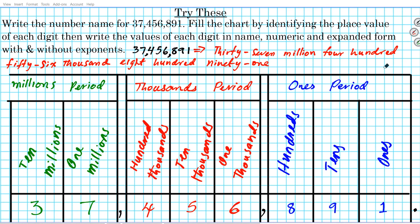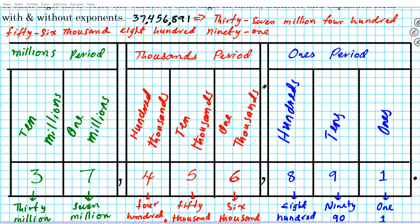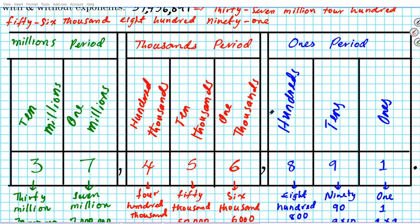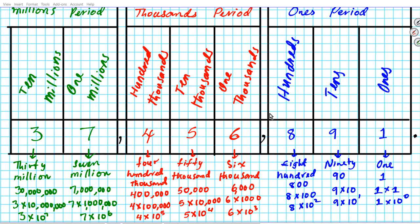Welcome back. Hopefully you had a chance to try out the practice problems. Here are the solutions to the table. Let me scroll down so you can see. There's the name form for the number — you can pause it and check your work. You can see the place values and what each one represents in name form, expanded form, with and without exponents. Let us know how well you did. If there are any questions, go ahead and put them in the comment section below.